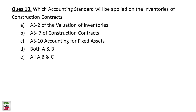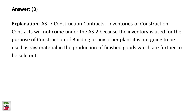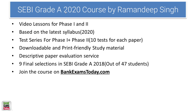Which accounting standard applies to inventories of construction contracts? There is a separate accounting standard for construction contracts — that is AS7. Construction contract inventories fall under AS7, not AS2.